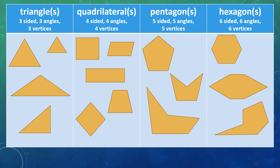So today, when you're doing your daily practice and your exit ticket, you will continue identifying attributes — meaning sides, angles, and vertices — but you will also be practicing and using the vocabulary words you've just learned: triangles, quadrilaterals, pentagons, and hexagons. Because these words mean what we learned about yesterday. So instead of just saying that a shape is three-sided, we are going to call it a triangle. Instead of just saying that a shape has four sides, we will now call them quadrilaterals — and the same for pentagons and hexagons.